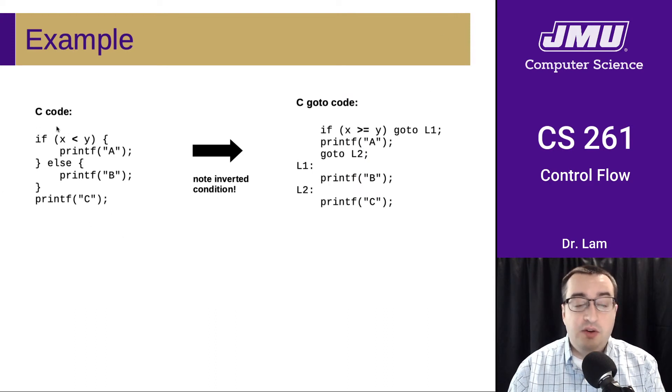For instance, here's some code that looks similar to the example that we just saw. And here is that code translated into C goto code. We've reversed the conditional. So we've said if x is greater than or equal to y, we'll skip over the body of this structure here. That means we'll go down to here.